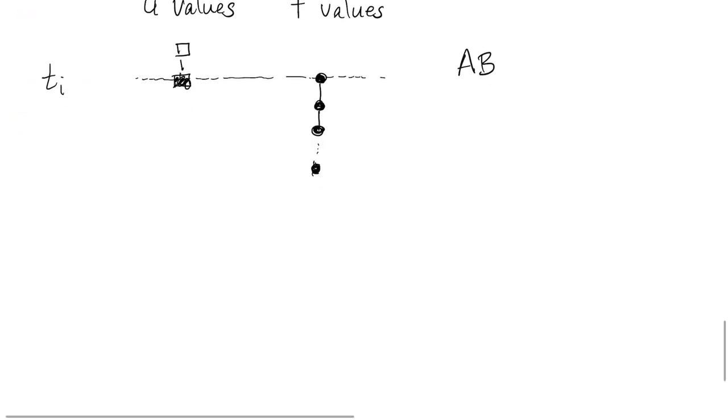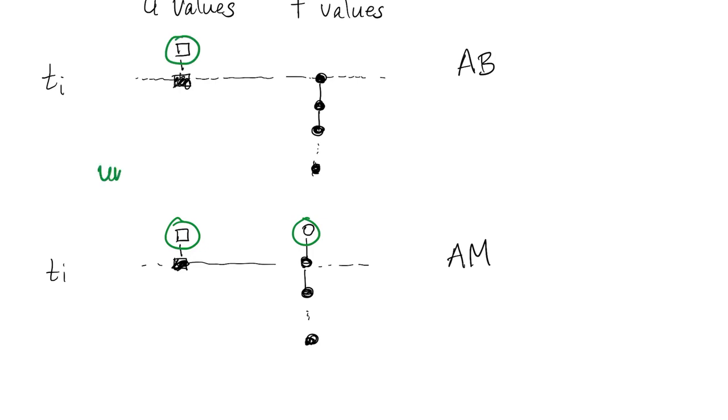In an Adams-Moulton method, we use the same two u values, but now we also use the f value at time i plus 1. The empty symbols here represent things that are unknown when we're trying to find a new time step.